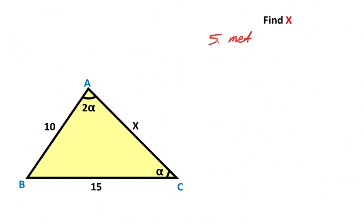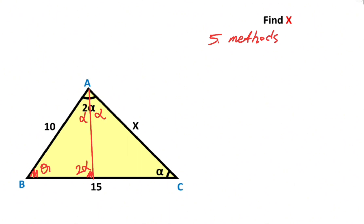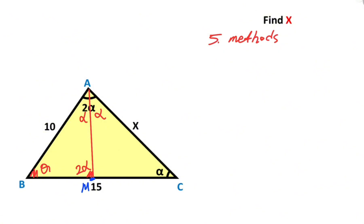Let's calculate the value of X using the fifth method. First, let's draw an angle bisector line. Notice that 2 times 3 angles equals 1 times 3 angles, so here must equal alpha. Let's call here theta, and let's call here point M. If you notice, this triangle and this triangle have the same angles. That means triangle BAM and triangle BCA are similar.